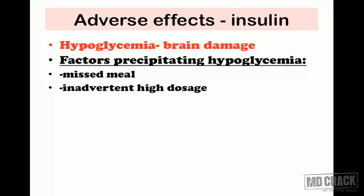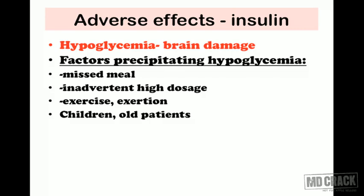The second factor is inadvertent high dosage. Diabetic patients are trained to self-administer insulin, but anxiety and dose-adjustment errors can lead to taking too high a dose, causing hypoglycemia. Third is exercise or exertion — if the patient exercises more than usual, blood sugar drops further than expected, and the same insulin dose will precipitate hypoglycemia. Children, elderly patients, and those with renal damage are also more susceptible.